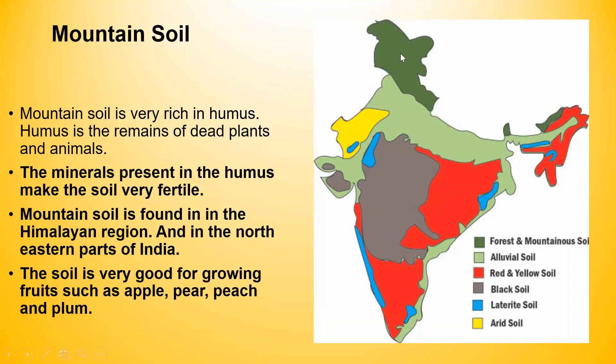Mountain soil is found essentially in the Himalayan region and mountain areas, as well as the north-eastern part of India. Mountain soil is very rich in humus — the remains of dead plants and animals. The minerals present in the humus make the soil very fertile. This soil is very good for growing fruits such as apple, pear, peach and plum.